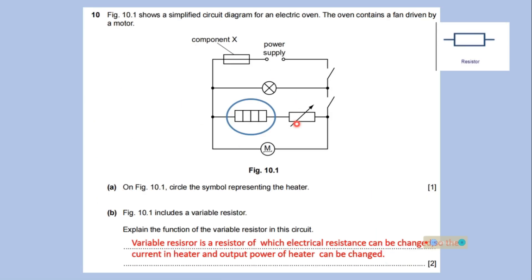This figure shows a simplified circuit diagram for an electric oven. The oven contains a fan driven by a motor. On this figure, circle the symbol representing the heater. Here, this symbol shows a heater. This is a fuse, this symbol shows lamp, this is for heater, this is for variable resistor, and this is for motor.